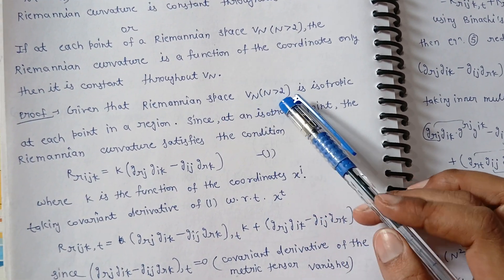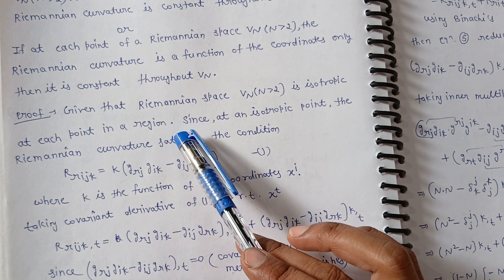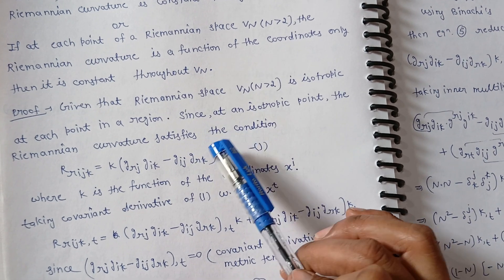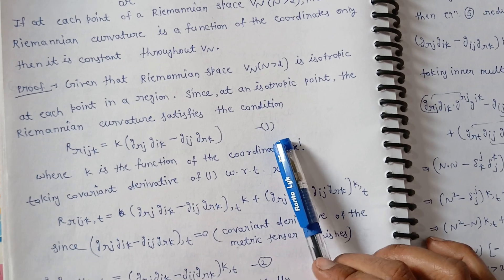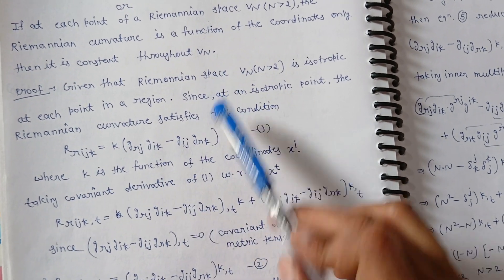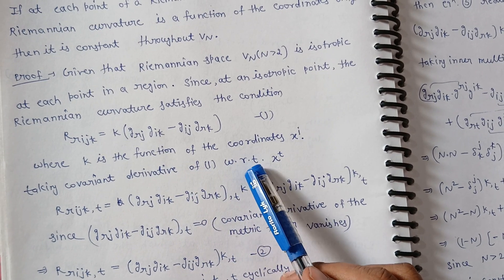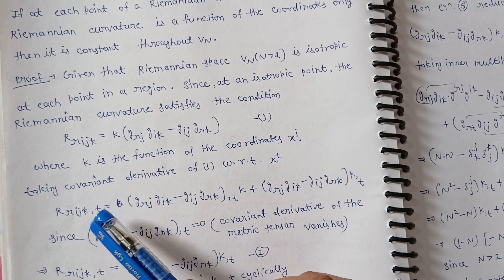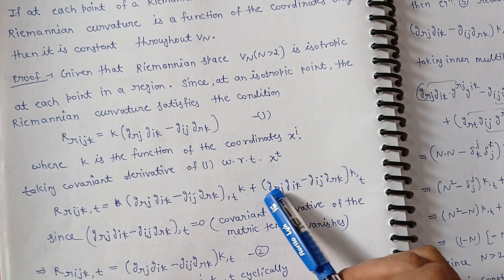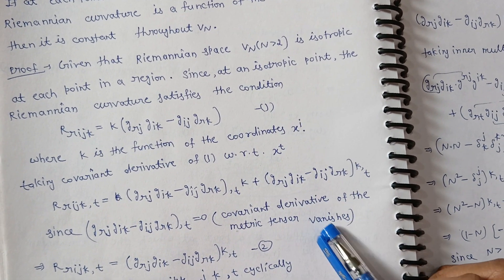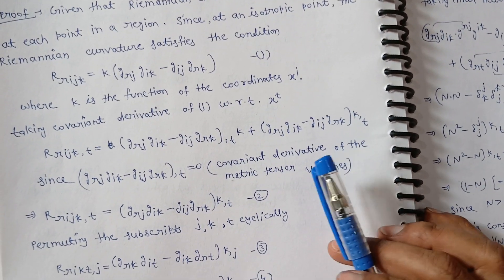Given that the Riemannian space Vn with n greater than 2 is isotropic at each point, the Riemannian curvature K satisfies the condition where K is a function of coordinates x_i. We take the covariant derivative of the metric tensor. This term is 0, so we can extract K. Permuting the subscripts j, k, t cyclically, we will obtain three equations.